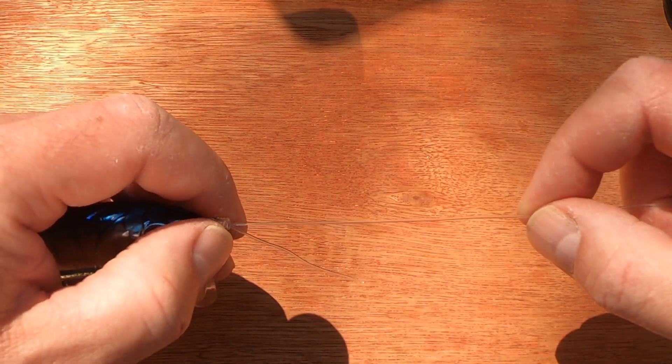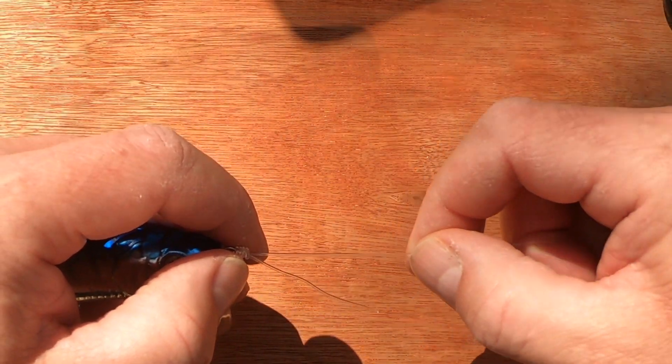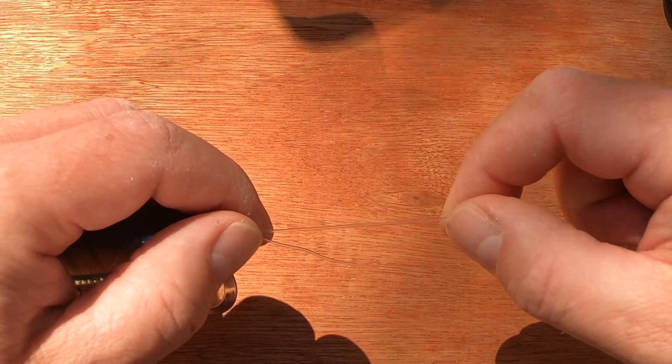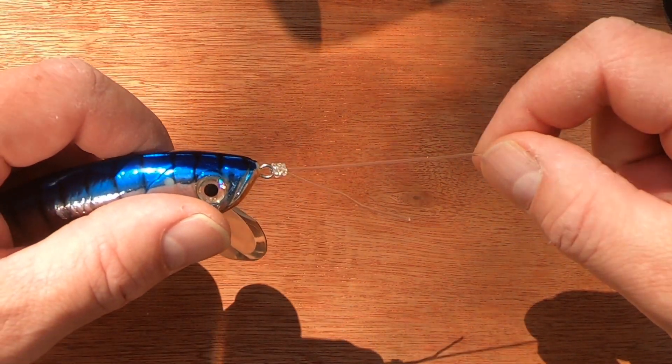But that there is your Grinner knot, or some people call it the Uni knot. You can do back to back Grinner knots to join braid to your leader. I will show you one of those.